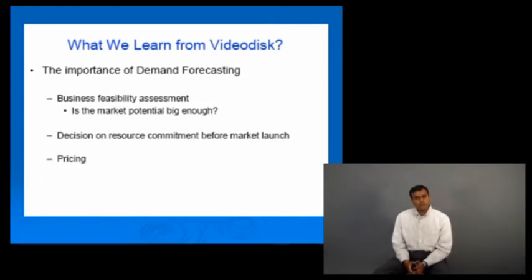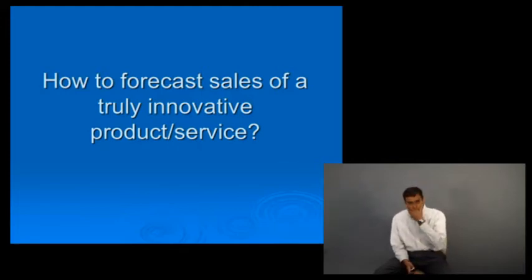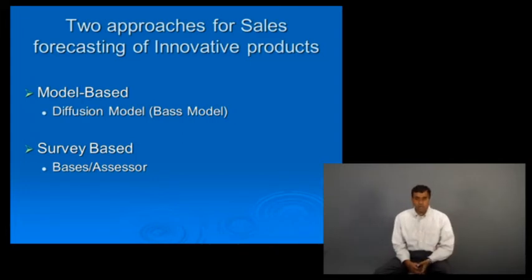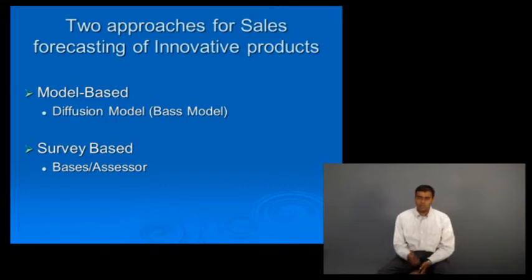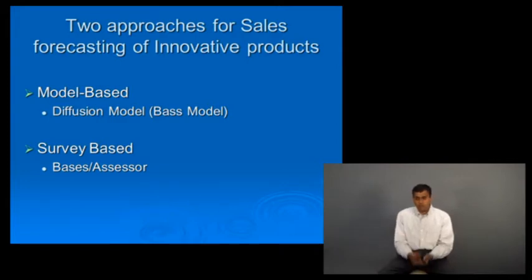So the question is: how do you forecast sales of a product like RCA's video disc or any new product like an iPad? Can you reliably back your forecast? Here are two approaches. One we've talked about before: if you have the market potential, you can look at how an innovation would diffuse over time — that's the Bass diffusion model, with its innovation rate and imitation rate parameters leading to fast or slow adoption. Today, let's talk about a different technique: a survey-based technique used a bit further along in the development process.